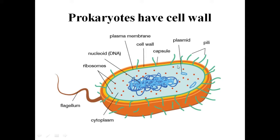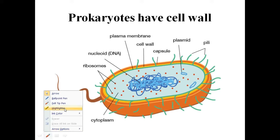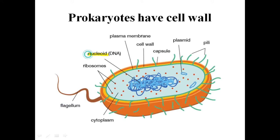In addition to the genomic DNA, there are smaller circular DNA molecules outside the genomic DNA, called plasmids. The plasmid DNA confers certain unique phenotypic characters to such bacteria. One such character is resistance to antibiotics.